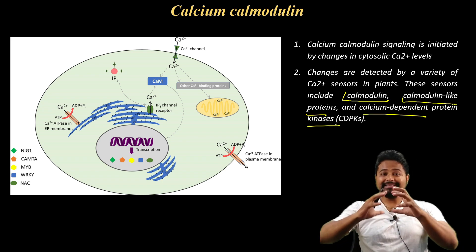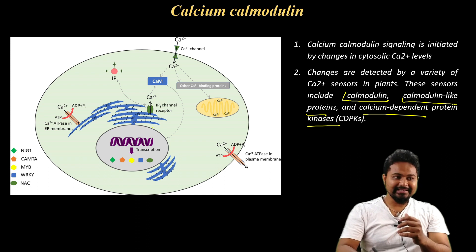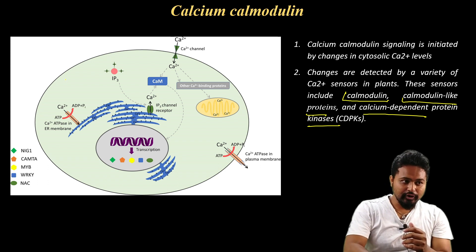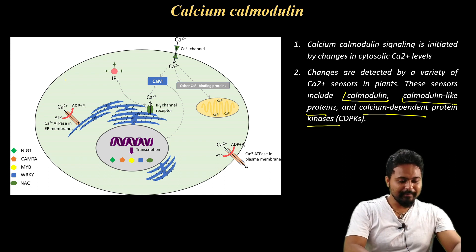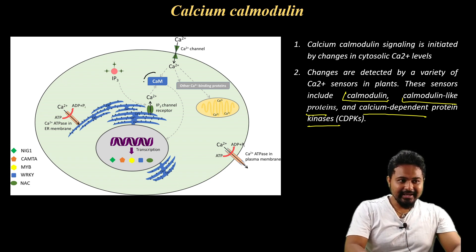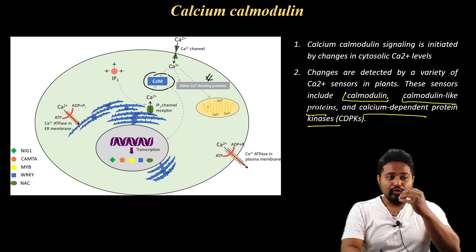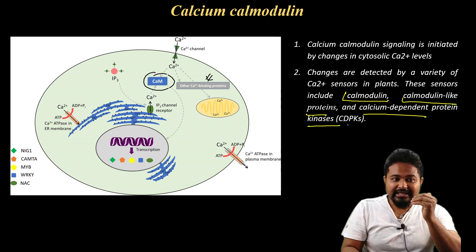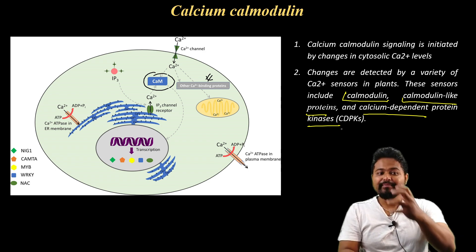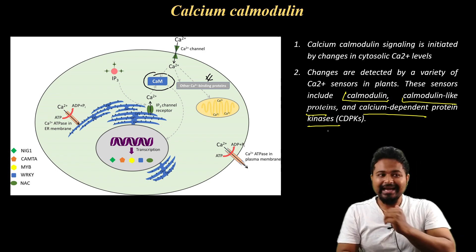These sensors are present in plant cells. This plant cell has sensors like calmodulin, calmodulin-like proteins, and under the same conditions, we also have calcium-dependent protein kinases.